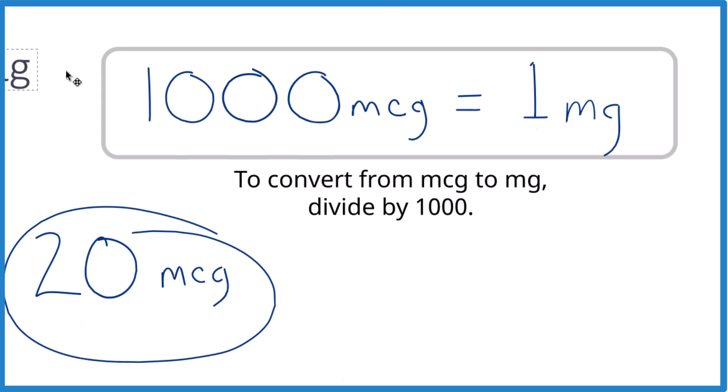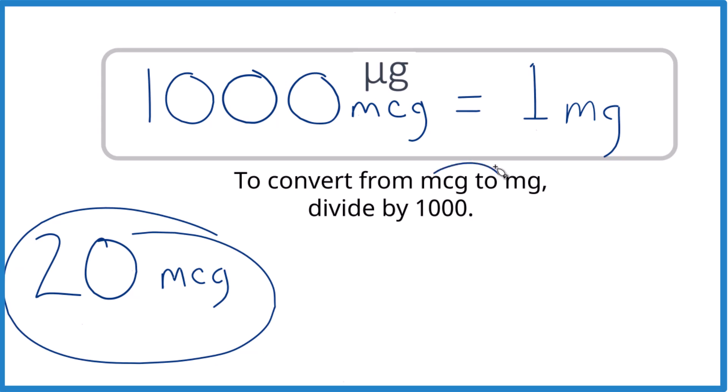And sometimes you'll see micrograms written like this. So anyways, a thousand micrograms equals one milligram. And when we go from micrograms here to milligrams like this, we're going to divide by 1000.